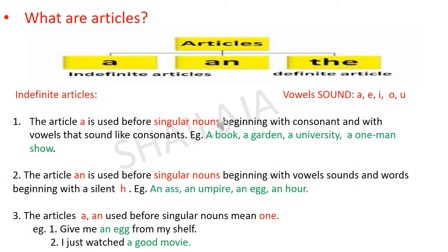The article 'an' is used before singular nouns beginning with vowel sounds and words beginning with a silent 'h'. For example: an ass, an umpire, an hawk, an hour — it's not 'havea', it is 'hour', children. Hope the first and second points are clear.